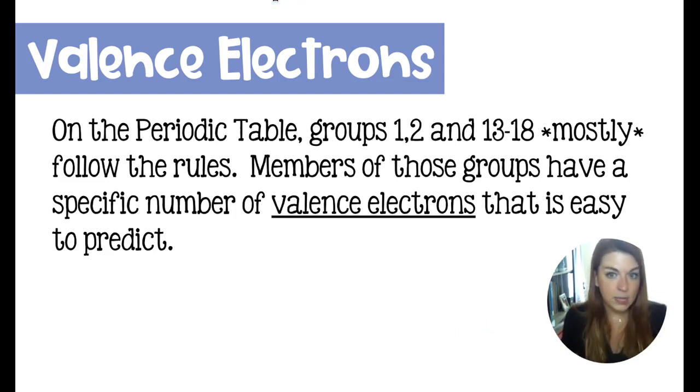On the periodic table, groups 1, 2, and 13 to 18 mostly follow some rules. They have a predictable number of valence electrons. And if you look at the periodic table, I'm talking about groups 1 and 2 over here, and then 13 to 18 over here. The two like towers of the castle, I like to call them. They have a specific number of valence electrons, and it's really easy to predict them.